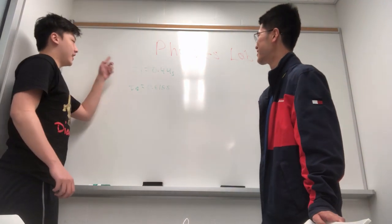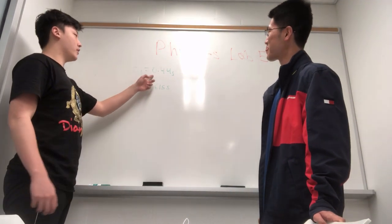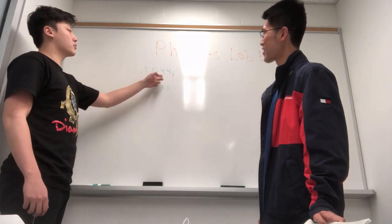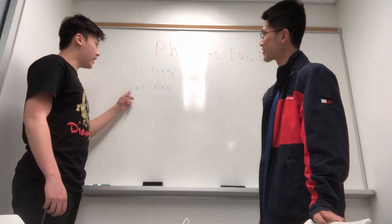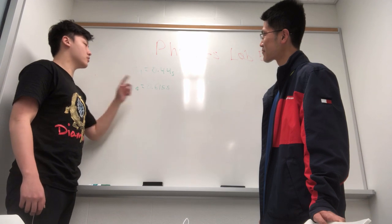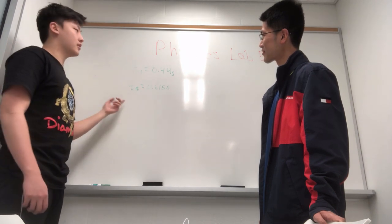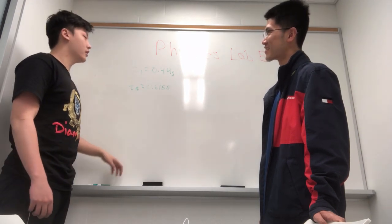You can see here that the time when we dropped it from 0.94 meters was 0.44 seconds, and when we dropped it from 1.88 meters, it's 0.615 seconds. Just because you doubled the height doesn't mean the time it takes to hit the floor doubles as well.